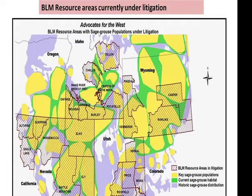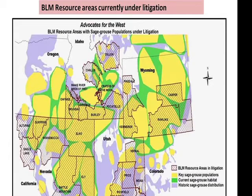There has been a great deal of legal activity—this slide from Advocates for the West shows all of the BLM resource areas currently in litigation. Much of this has to do with lack of adequate analysis for oil and gas and for grazing, but it's another point of leverage where the BLM can be encouraged to do more sustainable management and adopt final sage-grouse plans that could potentially resolve some of these other challenges.